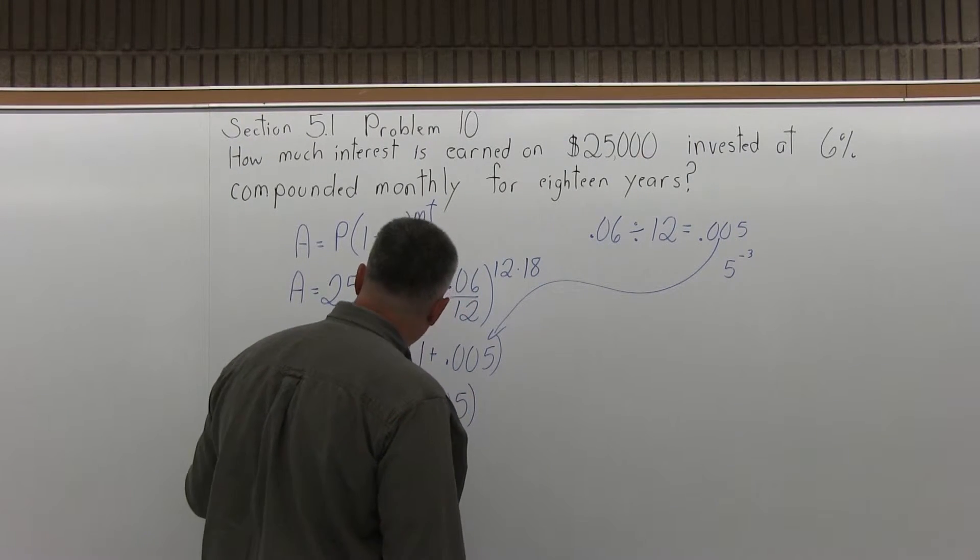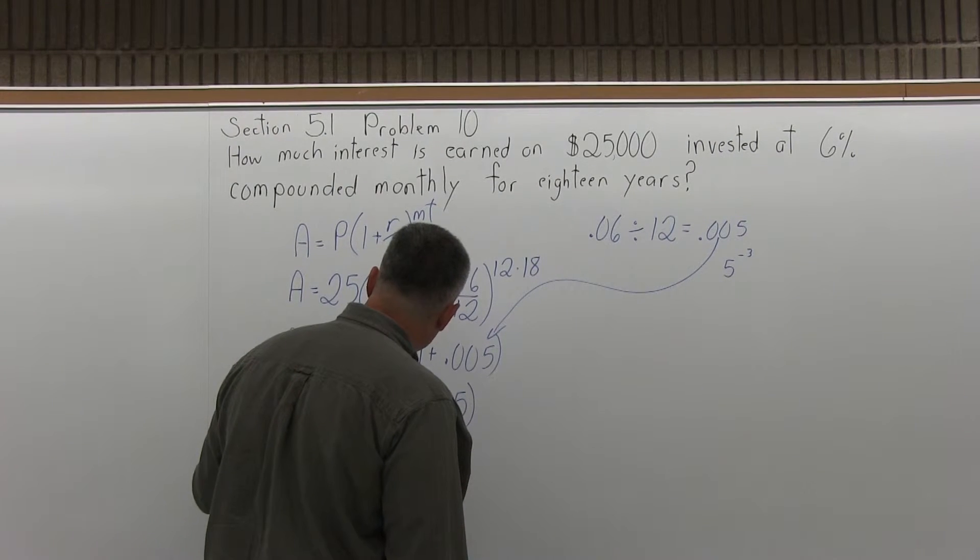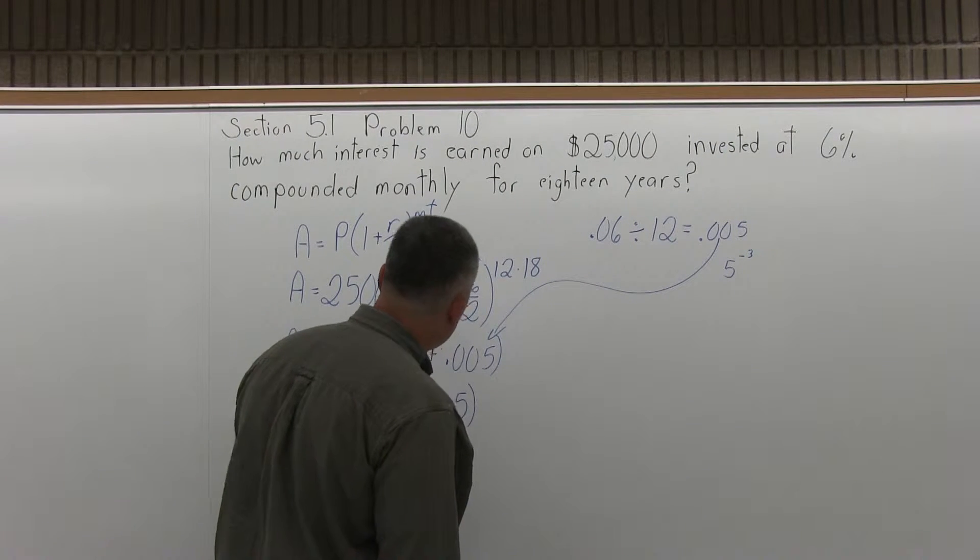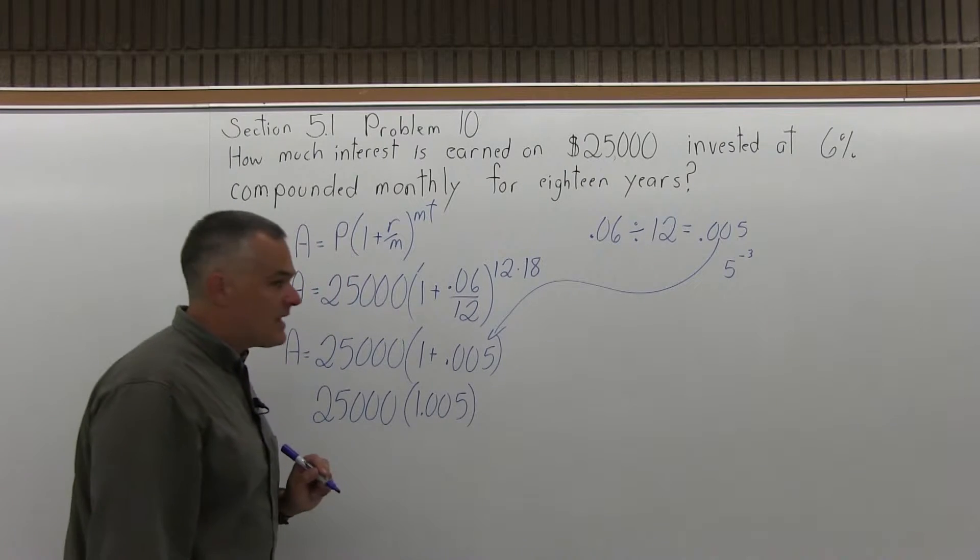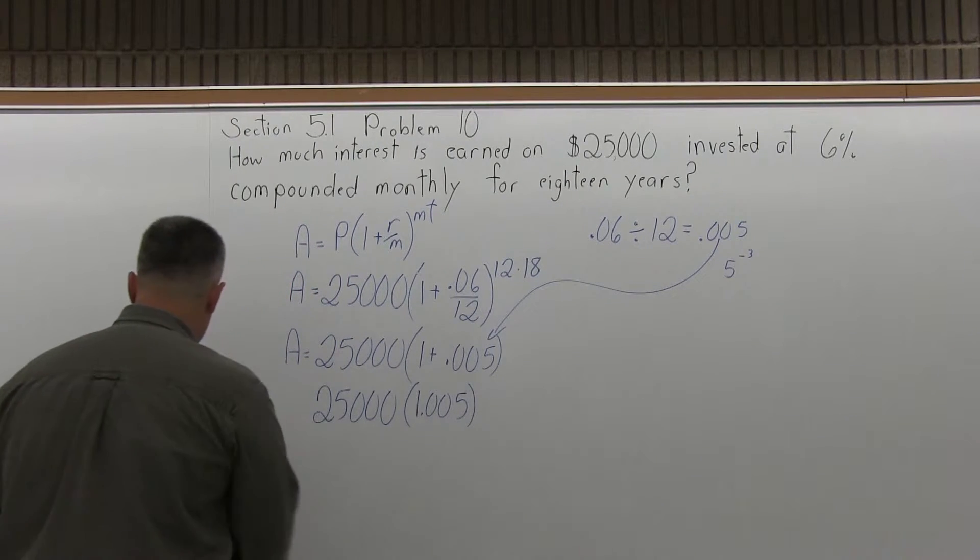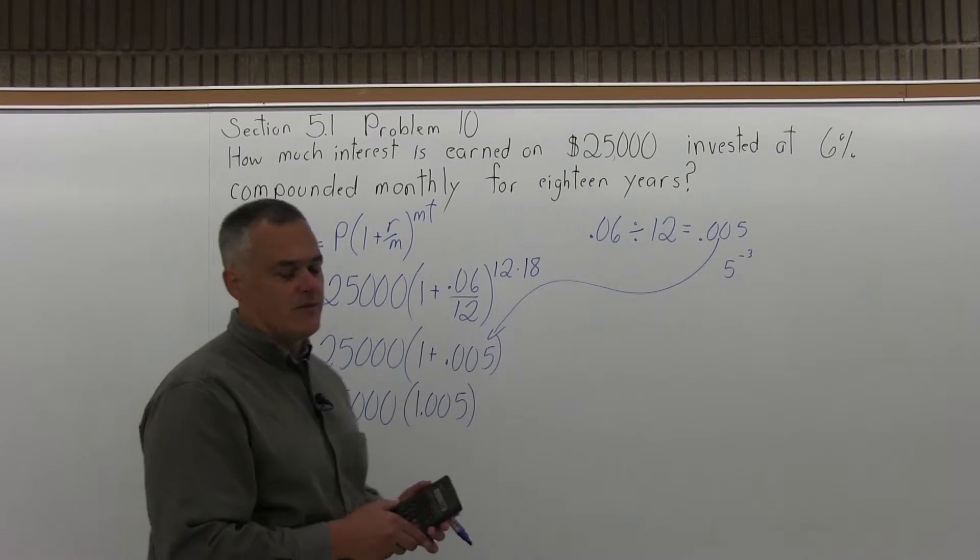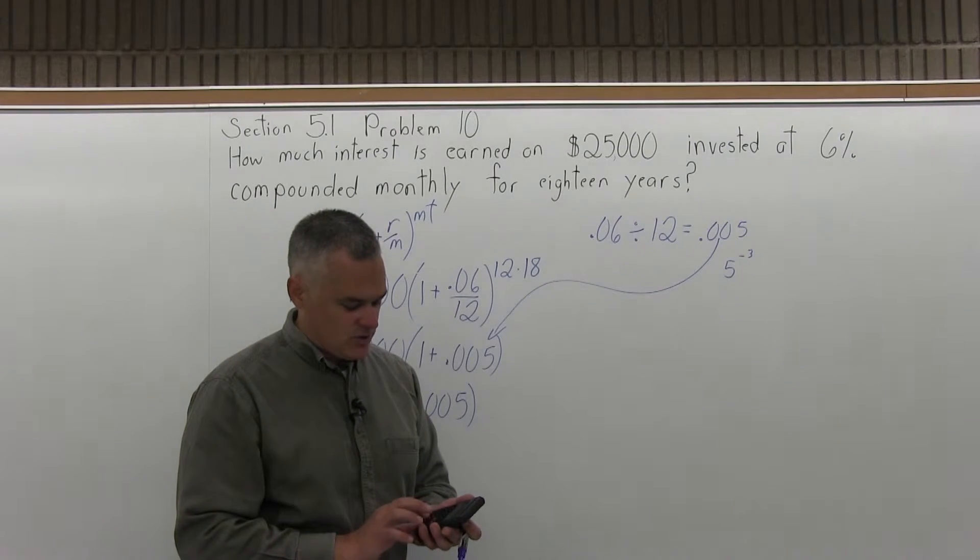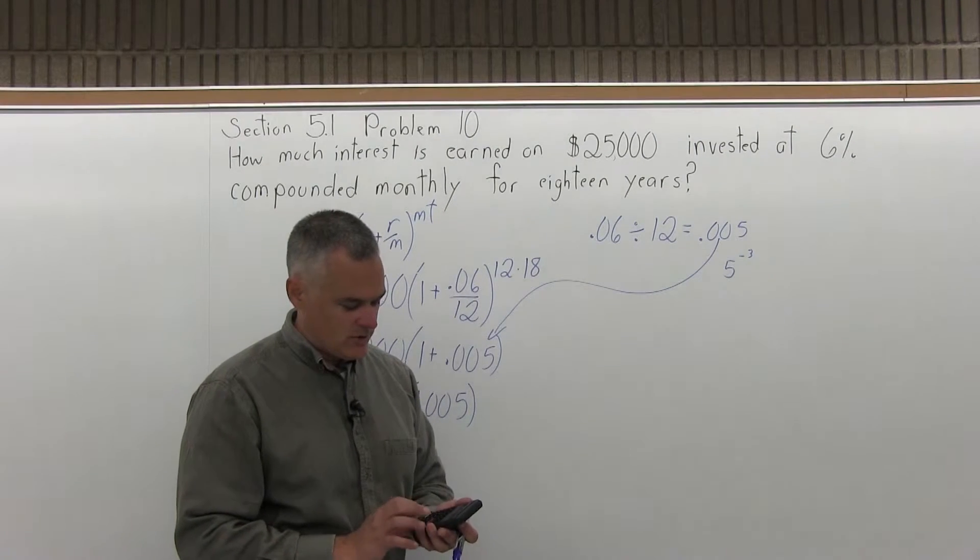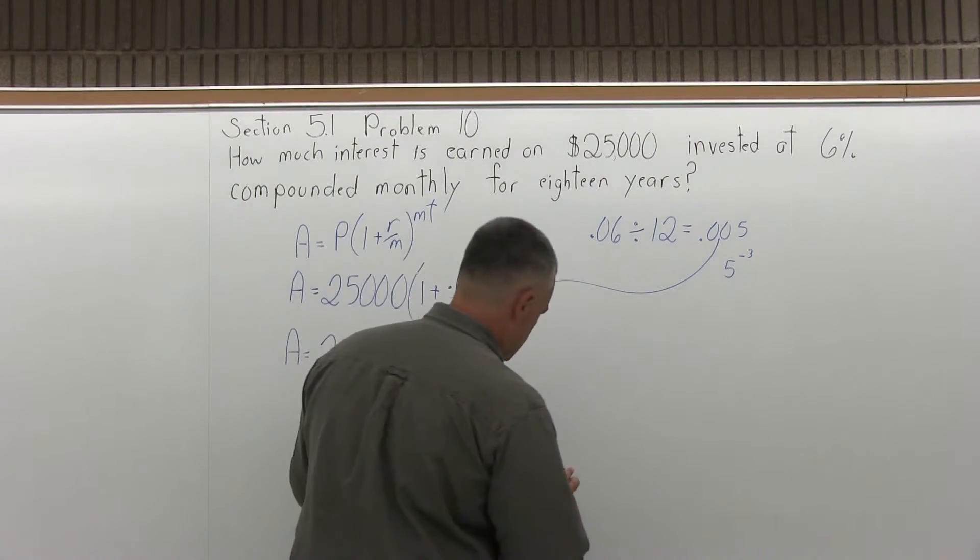Now there's still 25,000 multiplied times the parentheses, and the parentheses still have an exponent of 12 times 18, which I think comes out to 216. I just verify that with the calculator just to make sure before I go too far. I don't want to go too far with a mistake. It is 216.